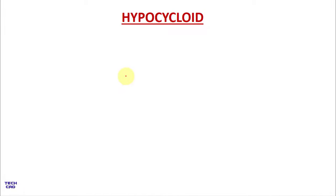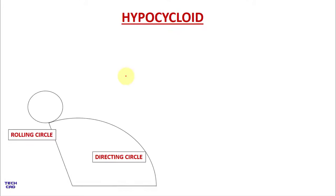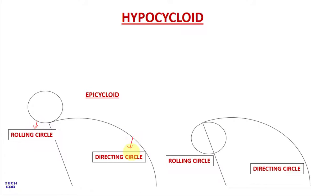In this video we are going to make a hypocycloid curve. In the previous video we made the epicycloid, which has a rolling circle and a directing circle. The only difference between hypocycloid and epicycloid is that in the epicycloid the rolling circle is outside the directing circle, but in the hypocycloid the rolling circle is inside the directing circle.